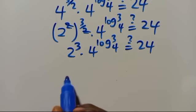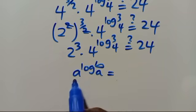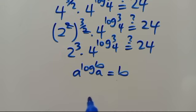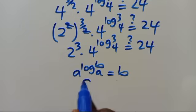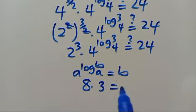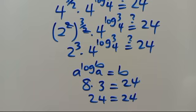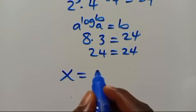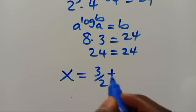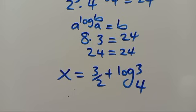Recalling that A to the power of log B in base A equals B — since the base matches — we get 2 to the power of 3 times 3, which equals 8 times 3, which equals 24. So we have 24 equals 24. Since the left-hand side equals the right-hand side, this confirms that X equals 3 over 2 plus log 3 in base 4 satisfies the problem given to us.